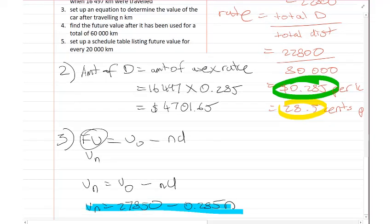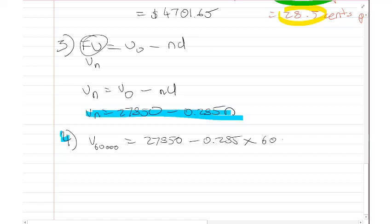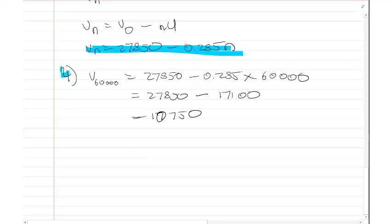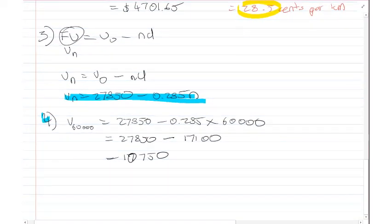Next part: find the future value after it has been used for a total of 60,000 kilometres. So v_{60000} equals 27,850 minus 0.285 times 60,000. That gives 27,850 minus 17,100 equals $10,750.